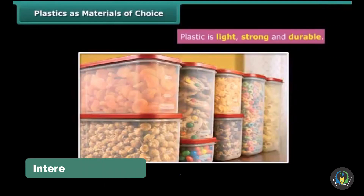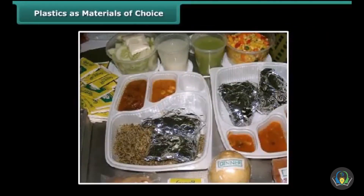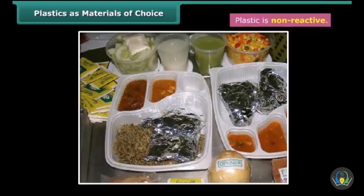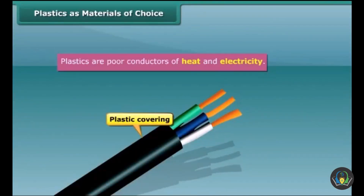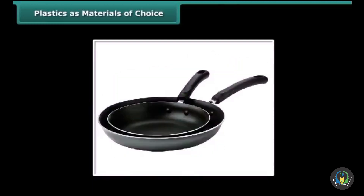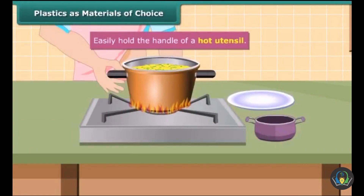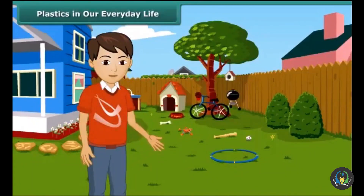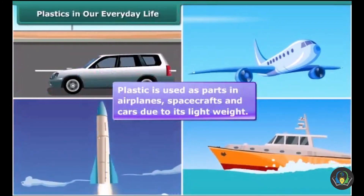Why are plastics so widely in use? Plastic containers are mostly used for the storage of food grains, pickles, salt and spices since these are relatively non-reactive and impermeable to moisture. Since plastic is a poor conductor of electricity, electrical wires have a plastic coating. Utensils used for cooking have plastic handles — plastic being a poor conductor of heat, we can easily hold the handle of a hot utensil. As it is light in weight, it is used to prepare parts of cars, spacecrafts, aircrafts and boats.